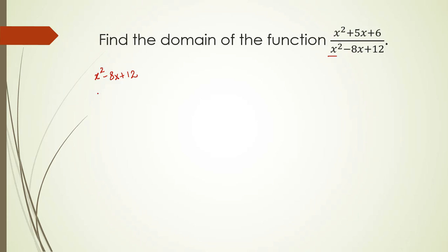So let's find out the root of this polynomial x squared minus 8x plus 12. We will use the method of middle term expansion. So this will give me x squared minus 6x minus 2x plus 12. Taking x common, 2 common here. I have got two roots of this polynomial as 2 and 6.